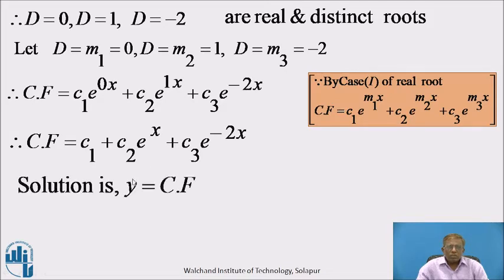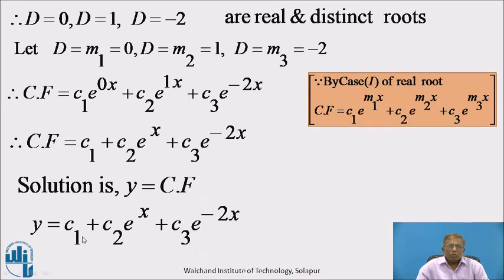The general solution of the given differential equation is y = CF. Therefore, y = c₁ + c₂e^x + c₃e^(−2x) is the required solution.